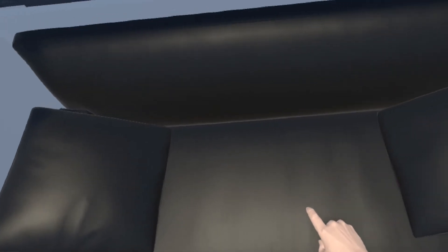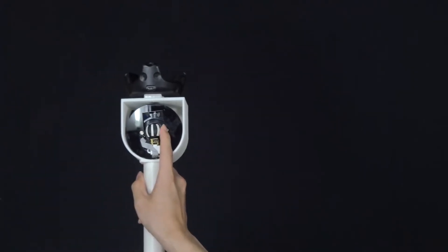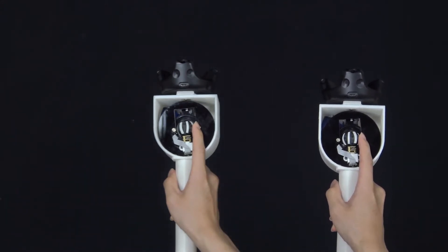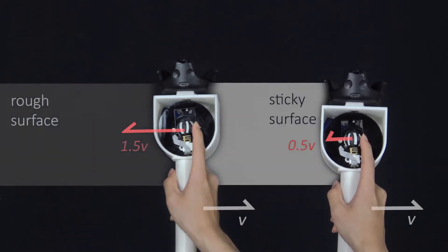When the user moves the controller on a virtual surface, a slip opposite to the movement is generated. Varying the slip speed by multiplying a percentage number with respect to hand motion speed, various textures could be produced.